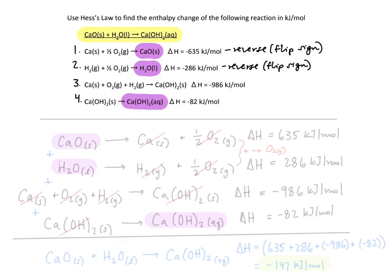So now let's go through and set up our calculation. We've got reaction one and we know we need to flip it so we have calcium oxide solid yielding calcium solid and half of oxygen gas and we know the enthalpy change for this is going to be positive 635 kilojoules per mole.